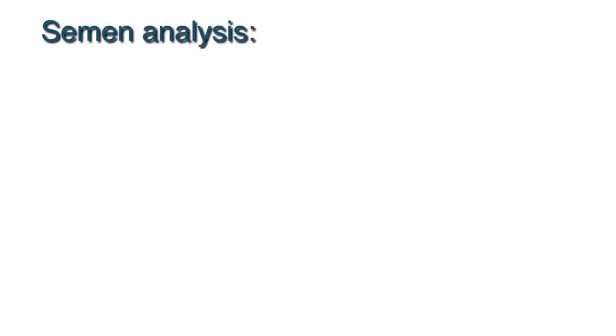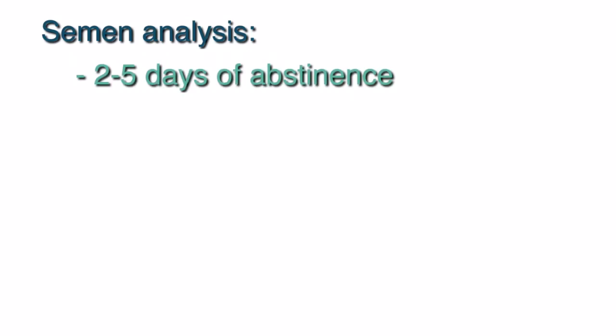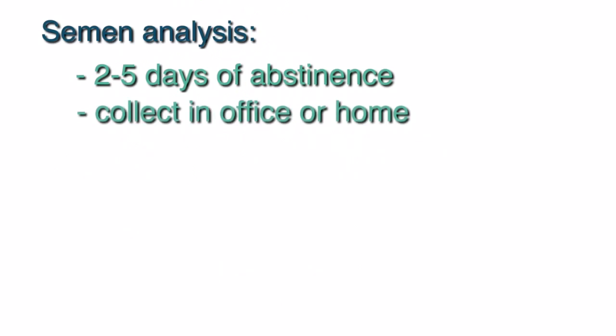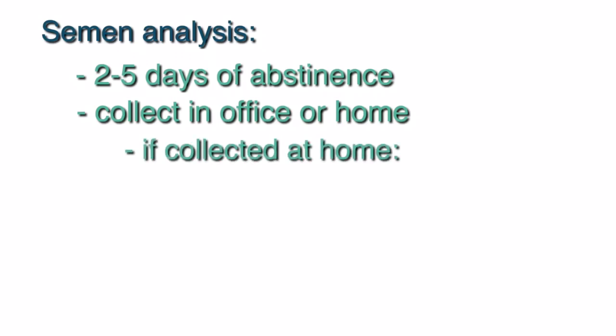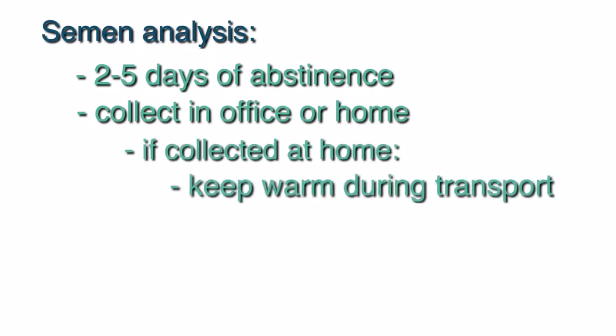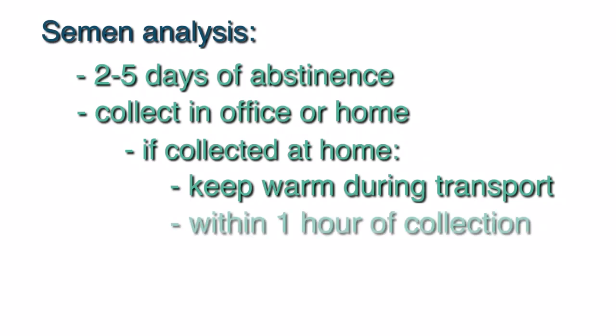A semen analysis is one of the main components of an infertility evaluation. This will help us determine if a male factor may be contributing to infertility. A semen analysis is usually collected after two to five days of abstinence from intercourse. Men can collect the sperm either in a private room in the office, which is ideal, or the man can choose to collect at home. If he collects at home, the specimen should be kept warm at room or body temperature during transport and brought into the office within one hour of collection.